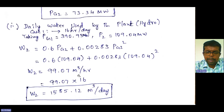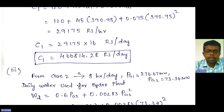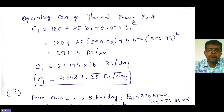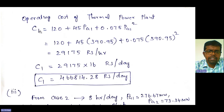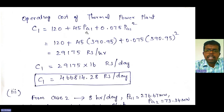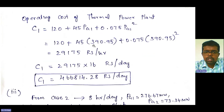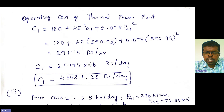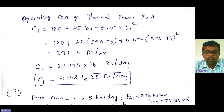Now calculating the operating cost of the thermal power plant for Case 1. Using C1 = 120 + 45·PG1 + 0.075·PG1² and substituting PG1 = 390.95 MW, we get C1 = 29181.75 rupees per hour. Multiplying by 16 hours gives the operating cost of the thermal power plant as 466,814.28 rupees per day for 16 hours.